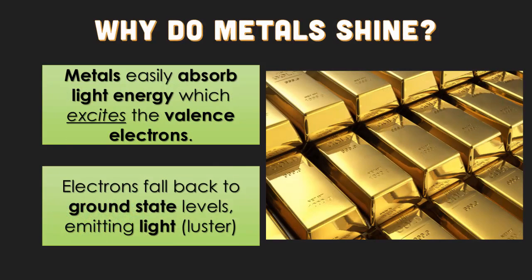Why do metals have this shine to them? Metals are easily able to absorb light energy which excites the valence electrons, and as those electrons fall back to ground state, they emit that light or luster — that shine. But what happens if you have a spoon that's all dirty looking? There's some corrosion on it. Corrosion is when we have a compound on top of the metal underneath, which is why you have to polish your silverware to get that compound off.